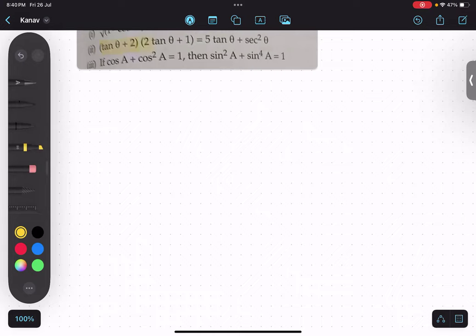You just open the bracket and multiplied. So tan θ into 2 tan θ would be 2 tan θ square.